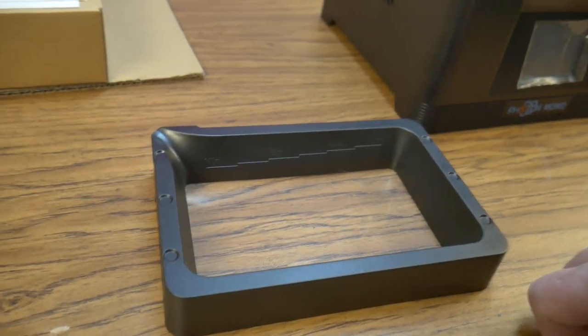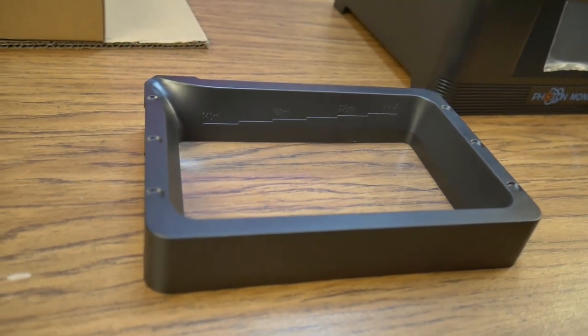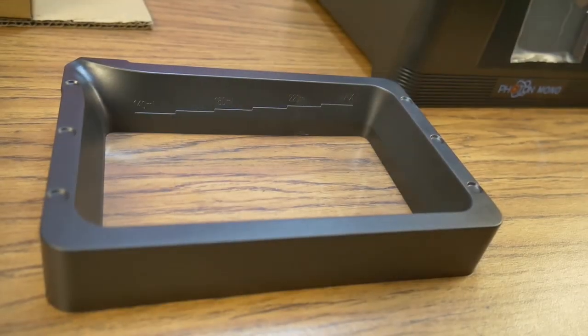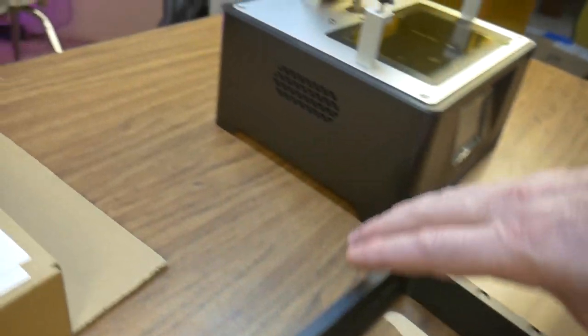Now we're back at the resin vat. It is made out of plastic. I'm not a fan of this. It is attached to the printer with a captive thumb screw which I do like.